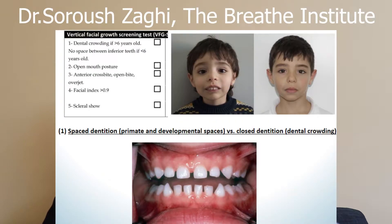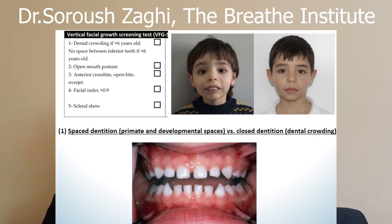Here we have an image of two boys — I believe they're twins — and one of them was a patient at the Breathe Institute. The boy on the left has craniofacial abnormalities, and the boy on the right doesn't. At this point, you might be asking: why would a child develop craniofacial abnormalities? I'm going to explain that in another video, so stay tuned.